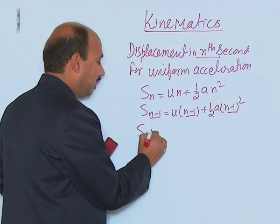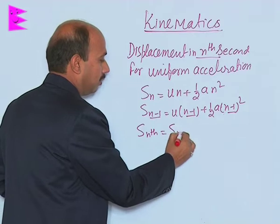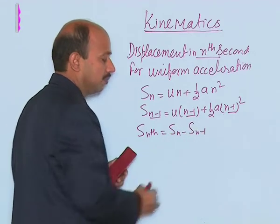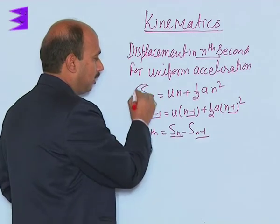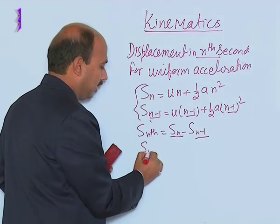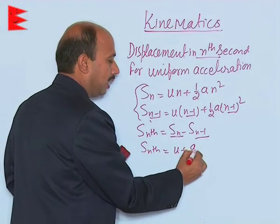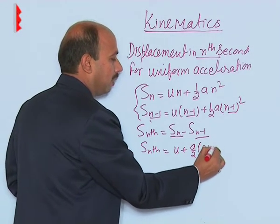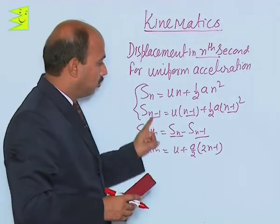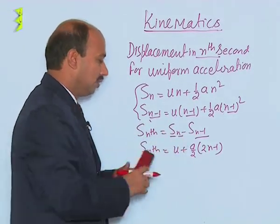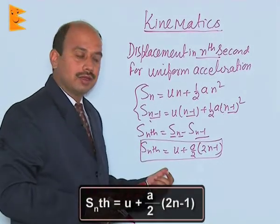Now, if you want to write displacement in the n-th second, you can write Sₙ − Sₙ₋₁. Put these two values and you will get Sₙ_th = u + (a/2)(2n−1) on solving. You have to solve by putting these two values and then you will get this relation.